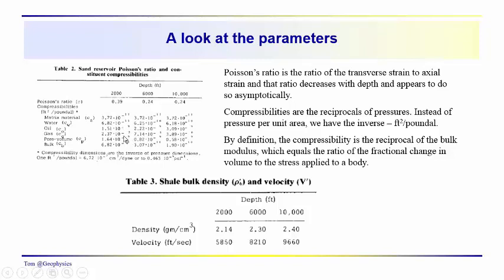And then we'll be doing this in order to calculate reflection coefficient. And the densities and the velocities of the shale are more or less constant, at depths of 2,000, 6,000, and 10,000 feet, with values of 2.14, 2.3, 2.4, and 5,850 up to 9,660 feet per second.